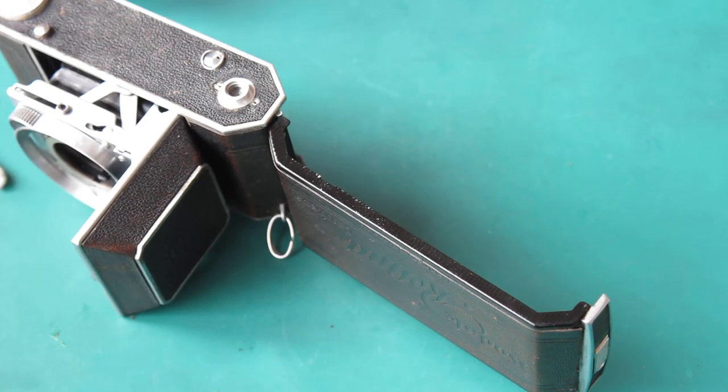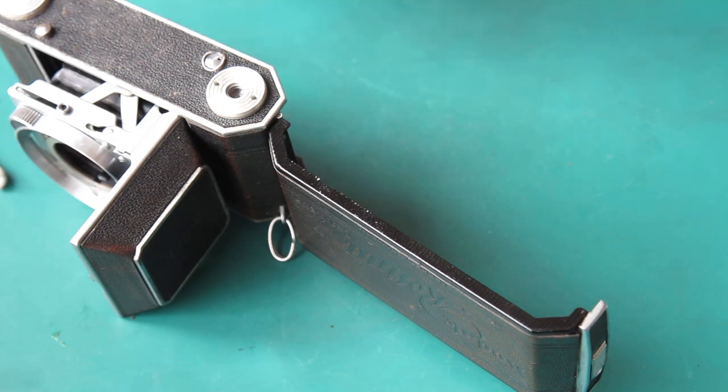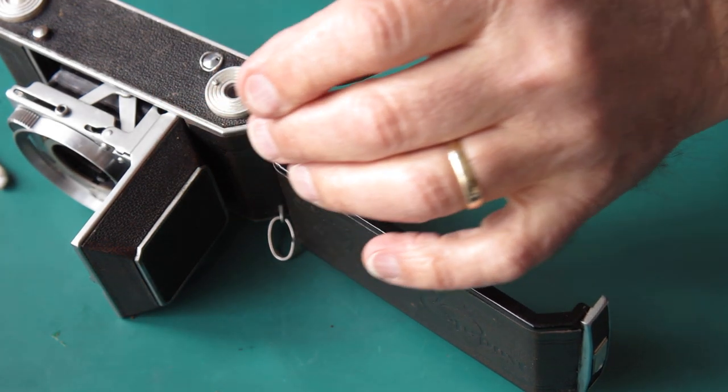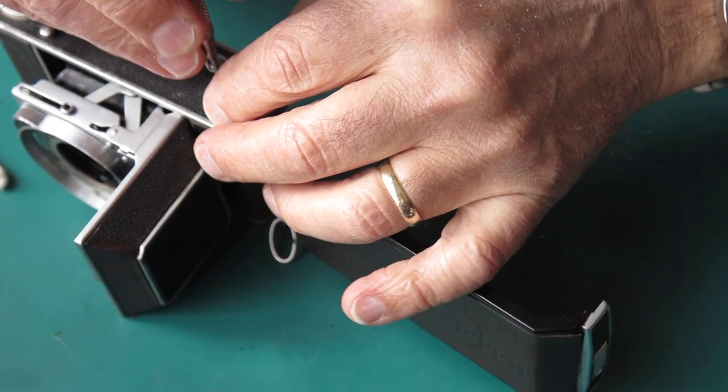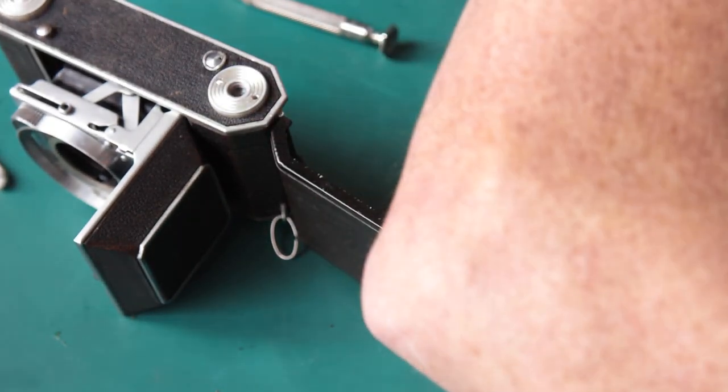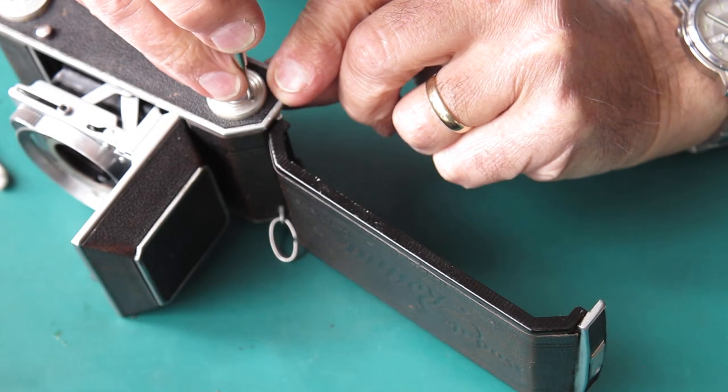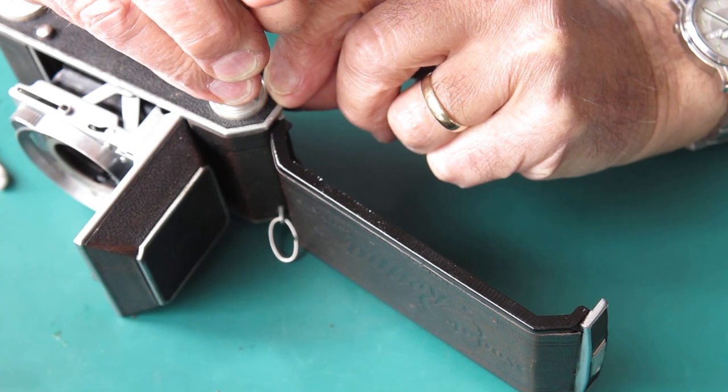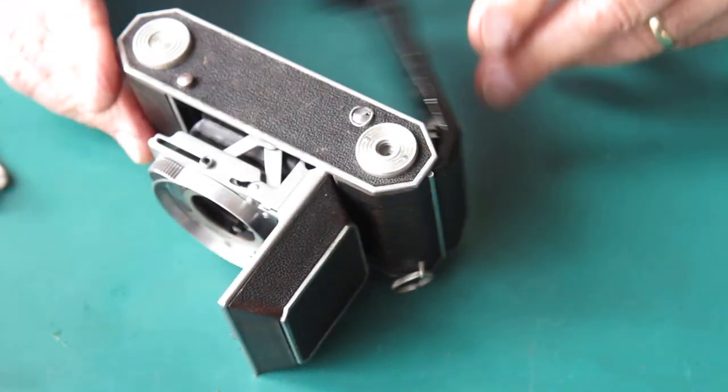I think we want our tripod surround back here now. There it is. And there are two small screws that hold that in position. Chrome brass and easily damaged. There's the last of them, and this is it. And that is the base of the camera dealt with.